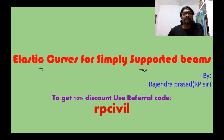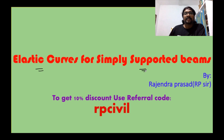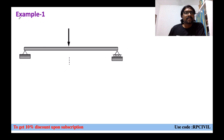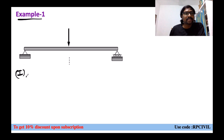We have already seen elastic curves - step by step procedure, construction, and cantilever beams. Now it is for simply supported beams. First example: this is your simplest beam with a central point load. Step one - by means of visual inspection we have to draw the elastic curve.